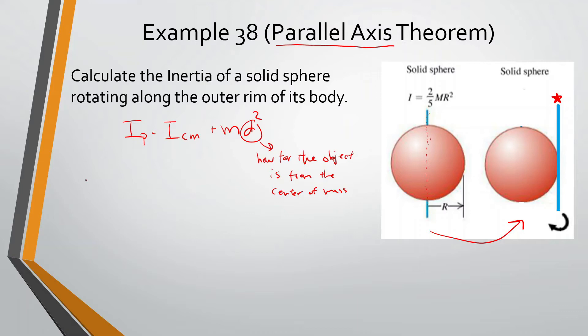So for the parallel axis theorem, let's try to do this problem. So we have IP, the inertia at the different point, is equal to ICM plus md squared. So for this, we know that the inertia at the center is two fifths mr squared. So we can say two fifths mr squared plus m, and then the distance from here to here, as we know, is r. So we can put this as r squared.